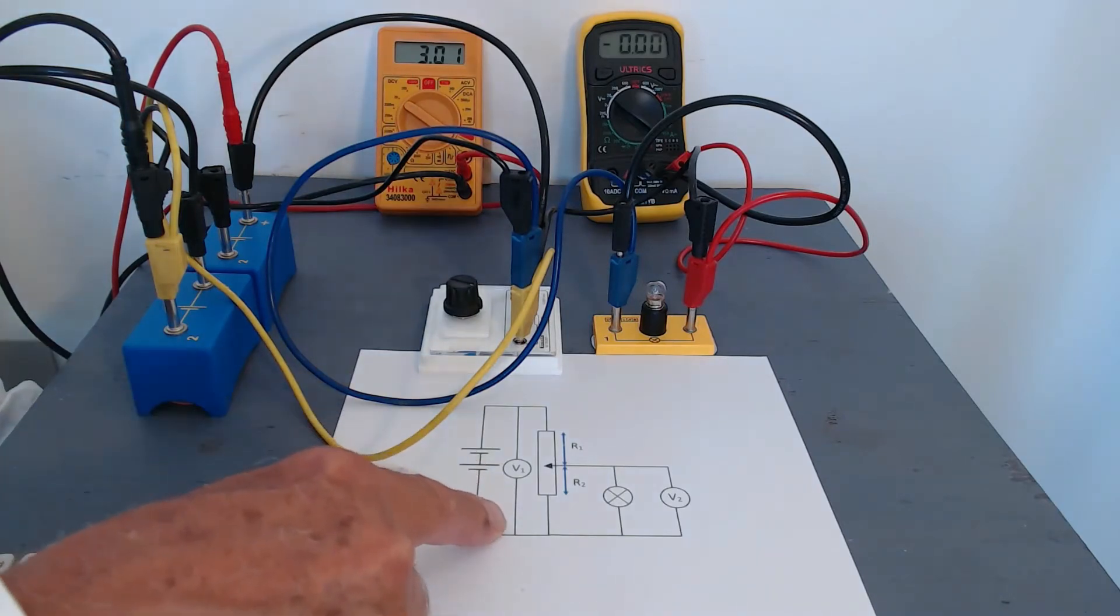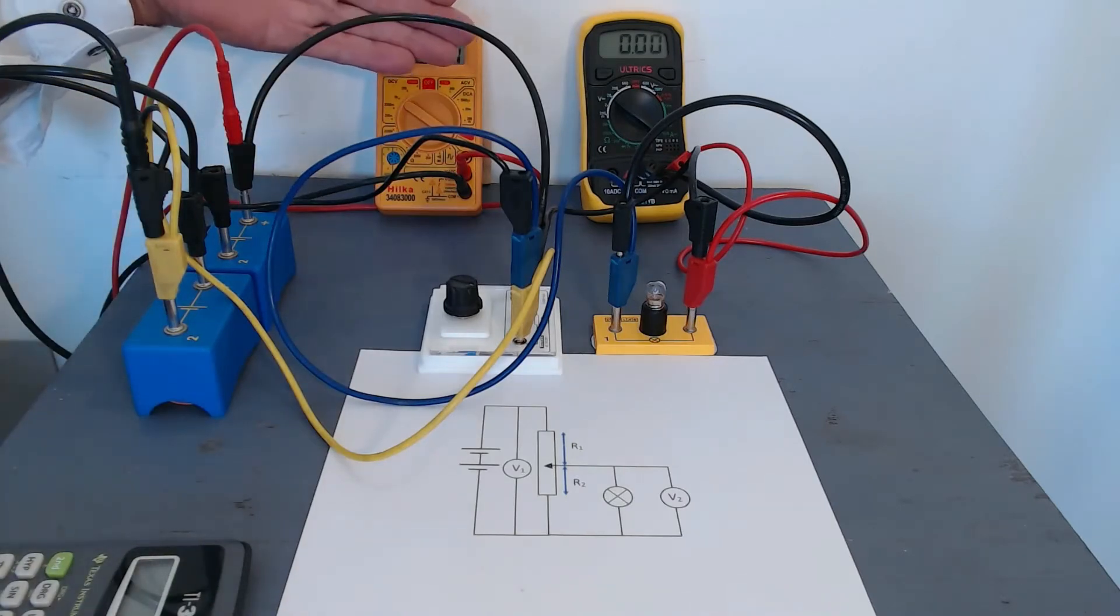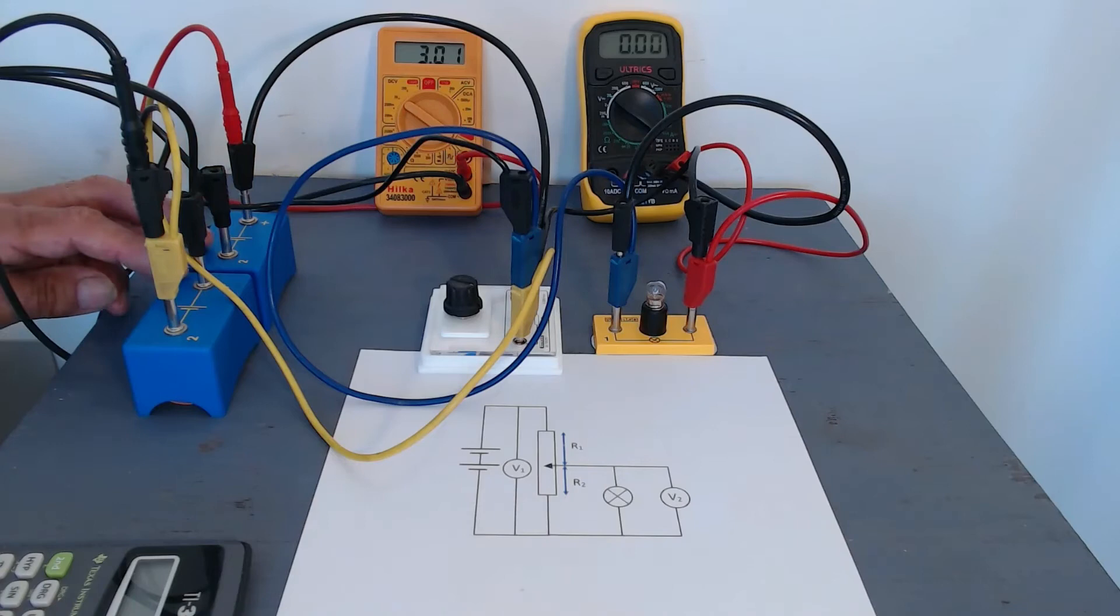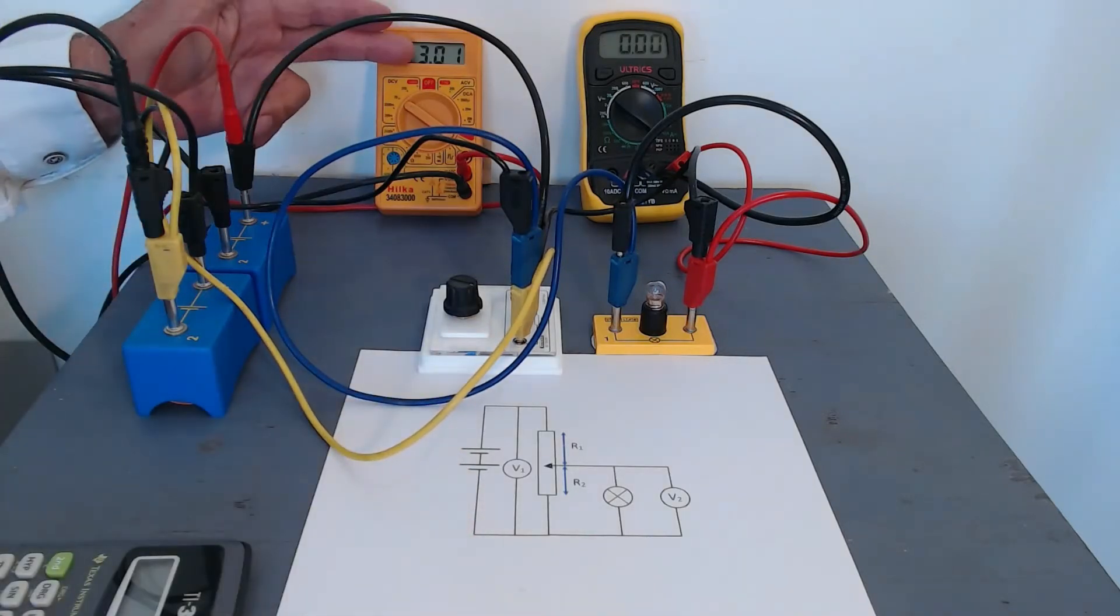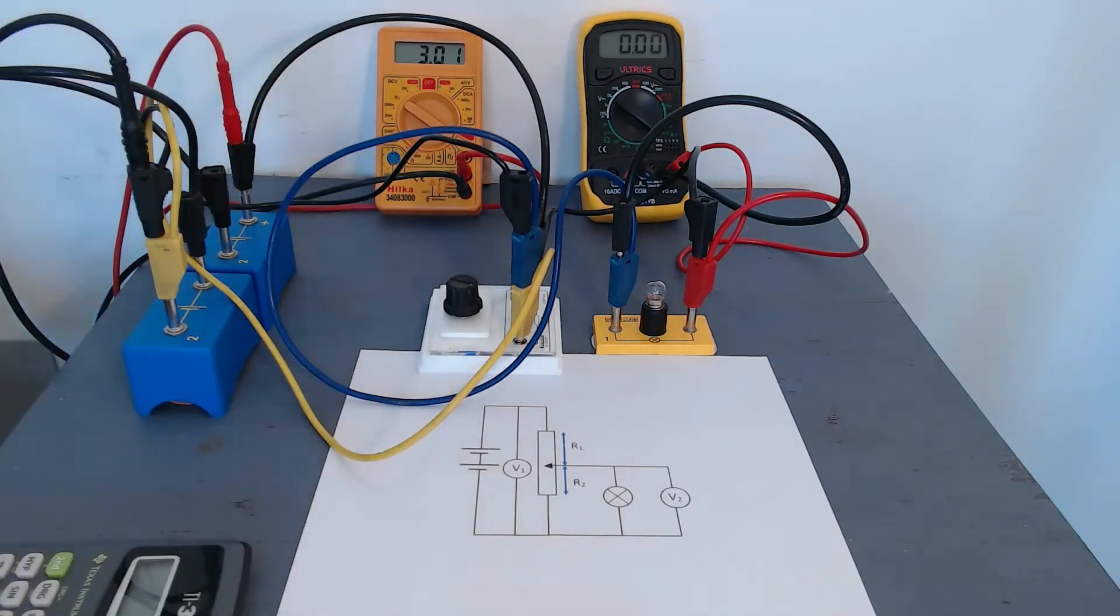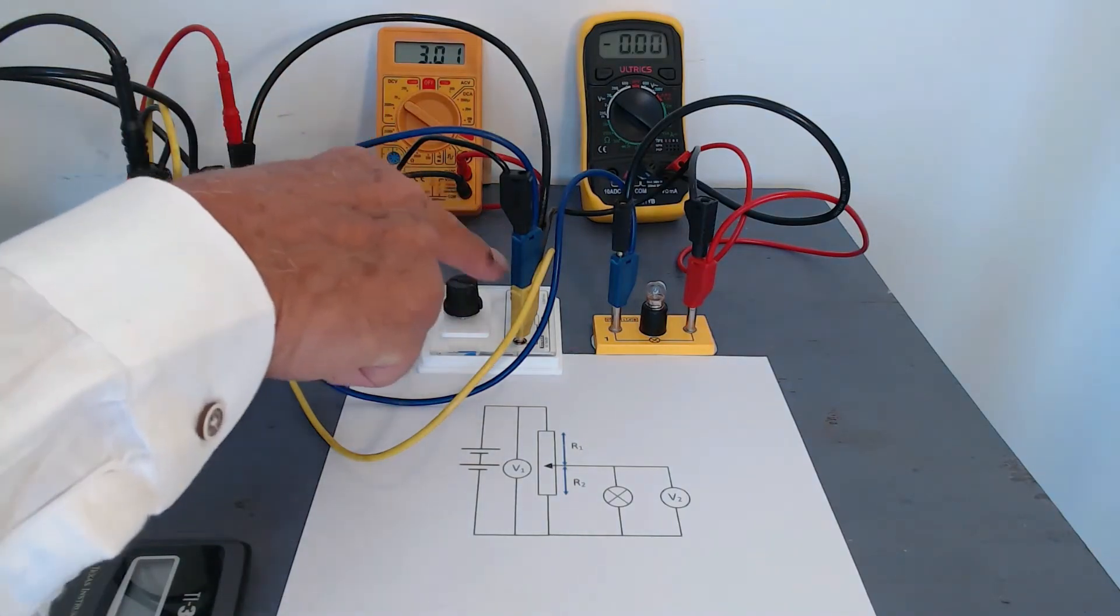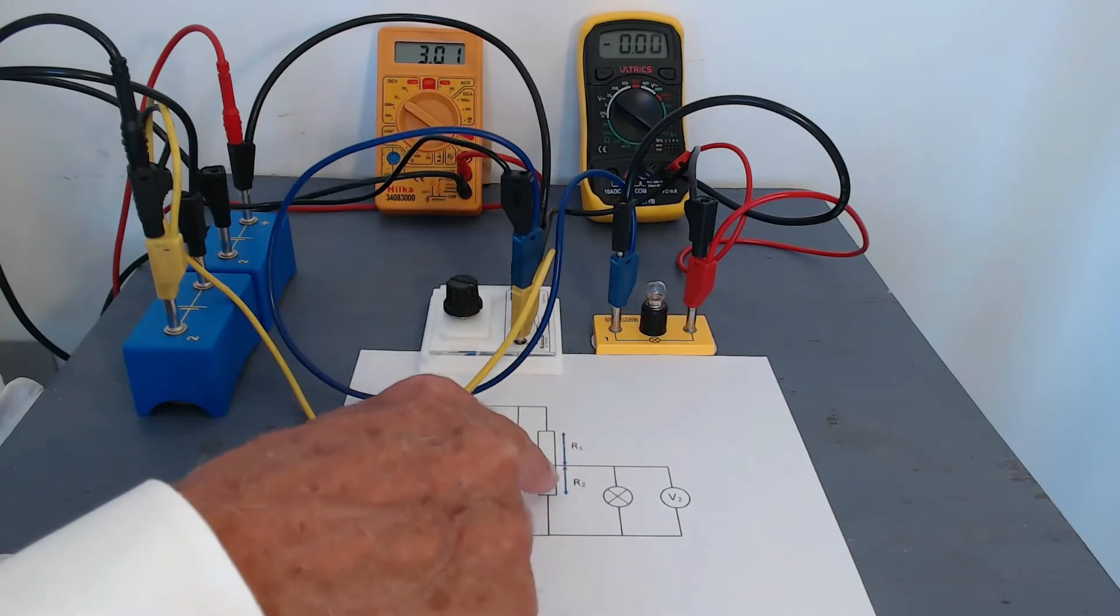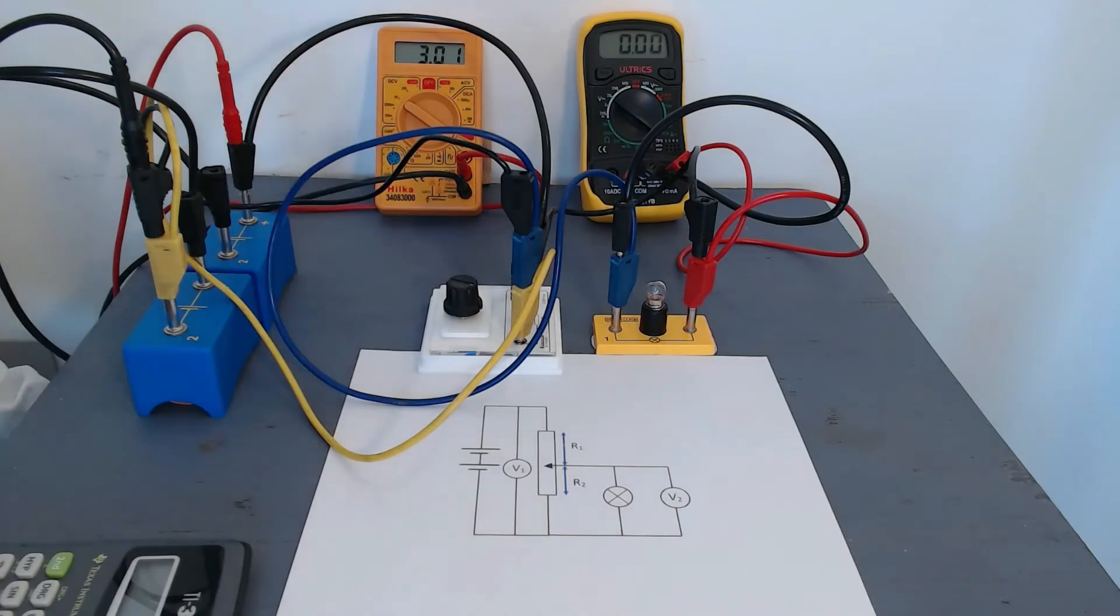I've got a circuit diagram here and the apparatus here. Let's just compare the two. We have the supply voltage, that's the two 1.5 volt cells here, and the potential difference is being measured by this voltmeter here, shown by V1 in the circuit diagram. That potential is being applied between here and here across a resistor R1 plus R2, and the total of that is 1000 ohms, 1k ohms.